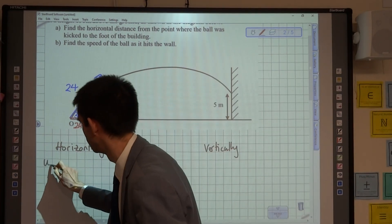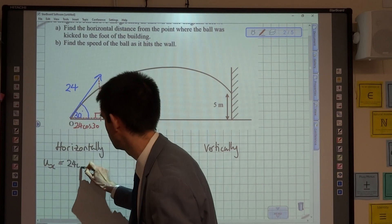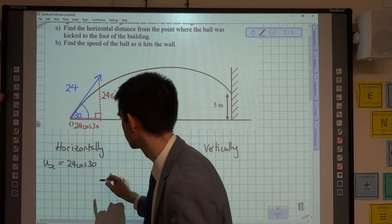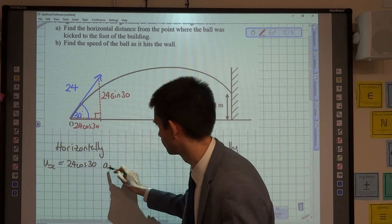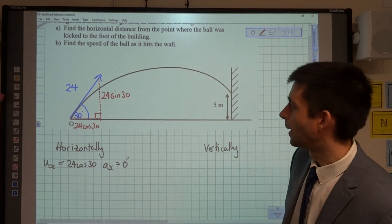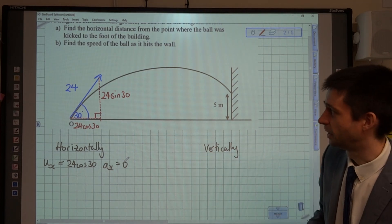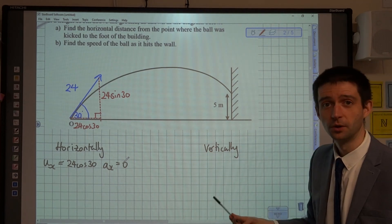Horizontally, we have our initial velocity, which we call ux, is 24 cos 30. The acceleration, because the speed is constant, is zero. We don't know anything about the distance travelled. We don't know anything about the time. So, at the moment, that's all we've got horizontally.